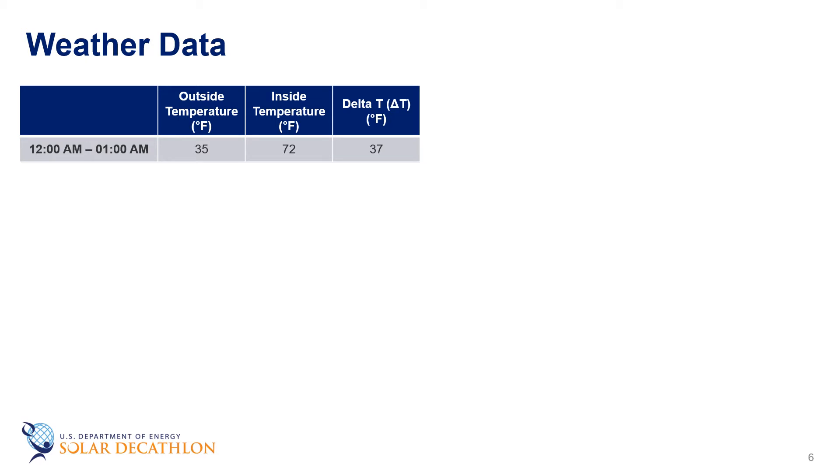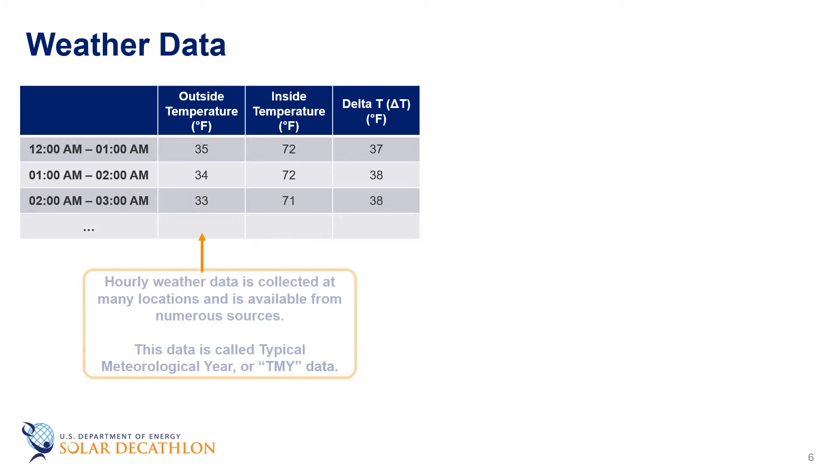We will start by thinking of one-hour time blocks. Each time block has a different outside temperature and potentially a different inside temperature. Looking first at the outdoor temperature, hourly weather data is collected at many locations and is available from a number of sources. This data has been transformed into data sets called typical meteorological years, or TMY data for short. More information about the format of this data can be found in the references.